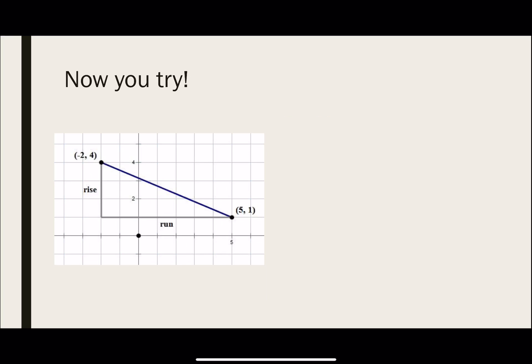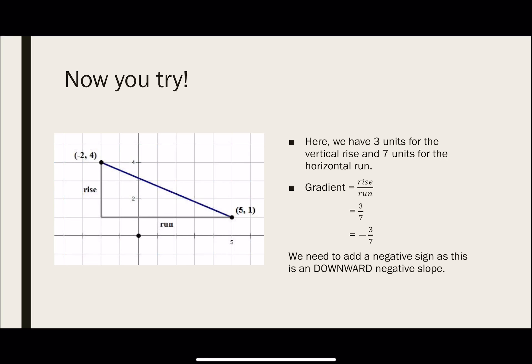Now, let's try this one. You can pause the video and try it for a while before you reveal the answers. When you're ready, press the play button. So for this question, you'll notice that the triangle has been drawn for you. The vertical rise, there's 3 units, and there's 7 units for the run. So gradient is rise over run, and we have 3 over 7. But my final answer, I'm going to add a negative because this is a downward negative slope. It's as if you're going downhill from left to right. So that's why we add a negative to it.